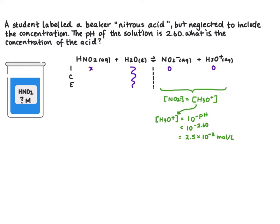We can now fill that in for our change and for our equilibrium concentration of these two species. The change for nitrous acid will be the same magnitude, just negative, and so our equilibrium concentration that we'll be solving for is X minus 2.5 times 10 to the minus 3. We're going to use our KEQ expression to solve for this.